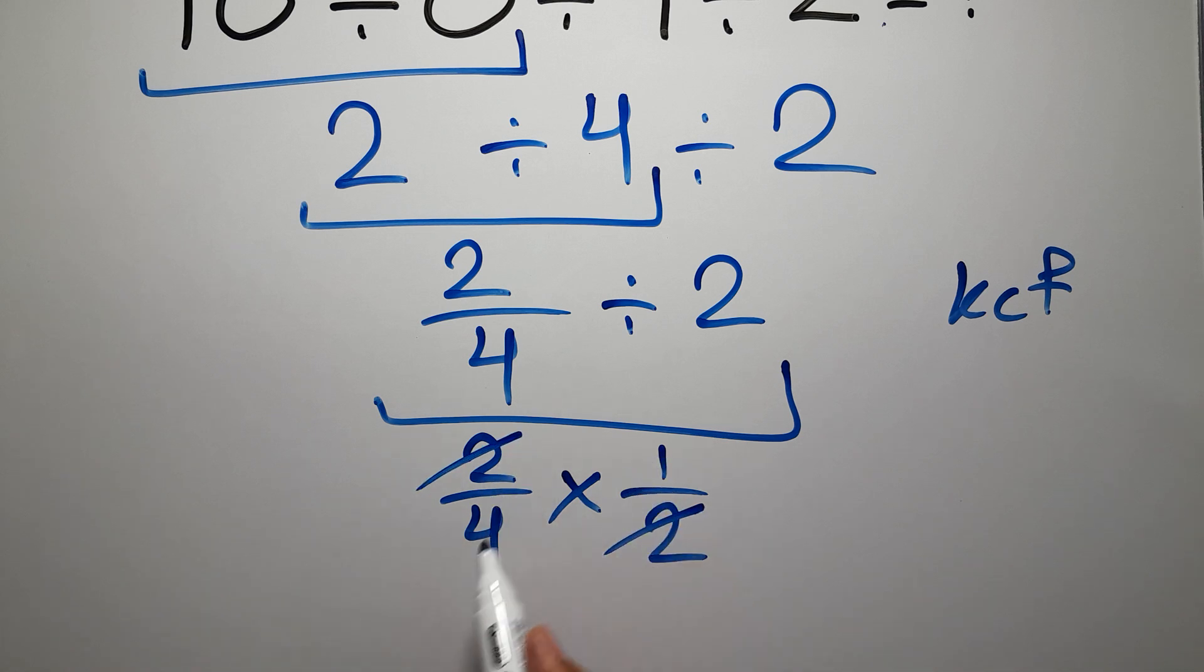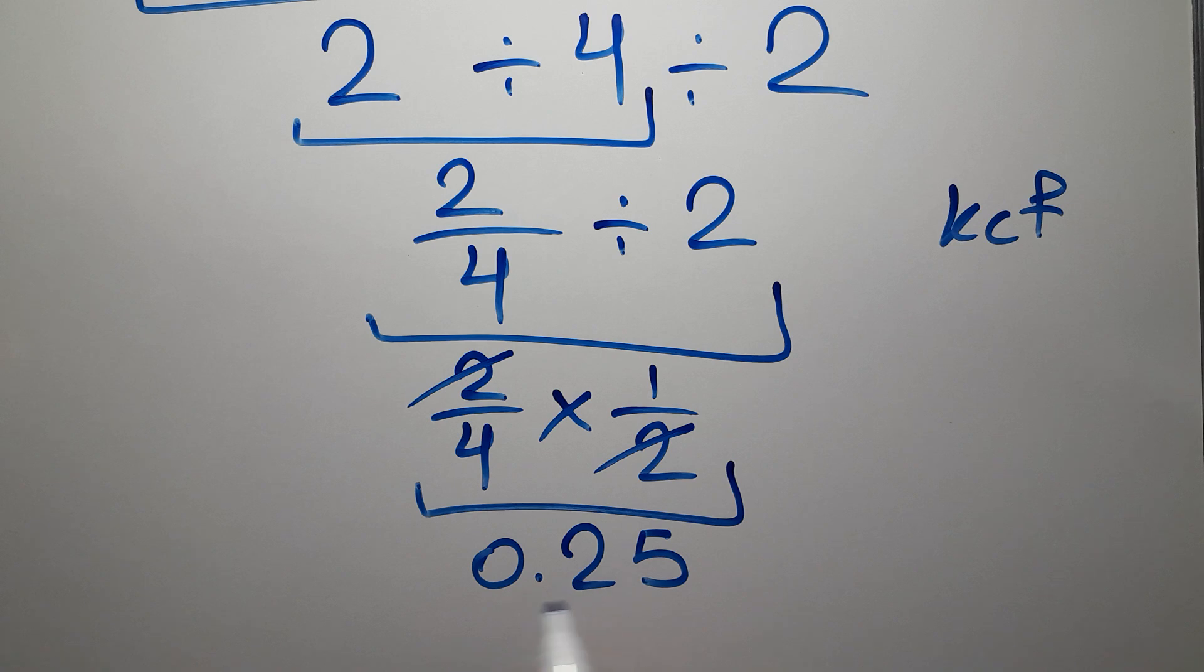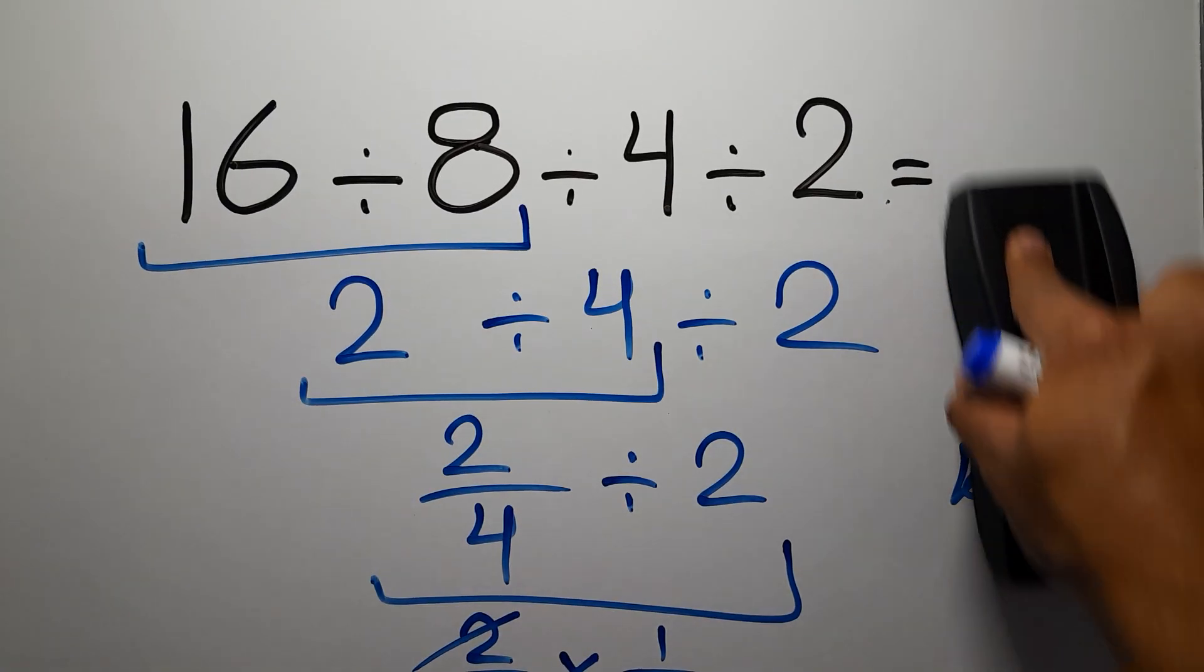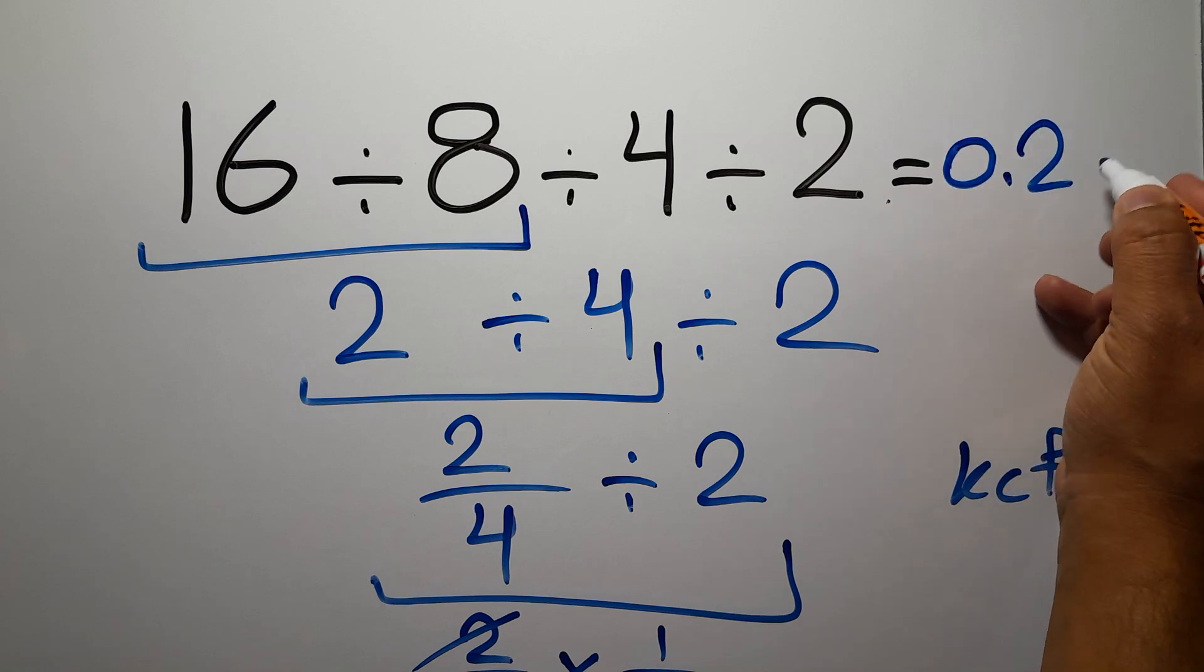So we have just 1 over 4, or 0.25, and this is our final answer to this problem. The correct answer is 0.25.